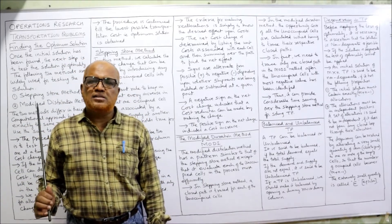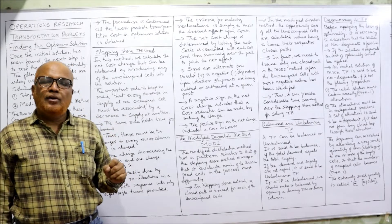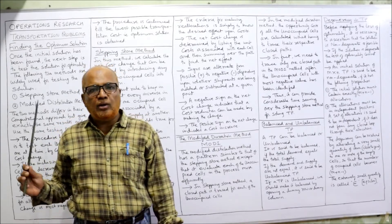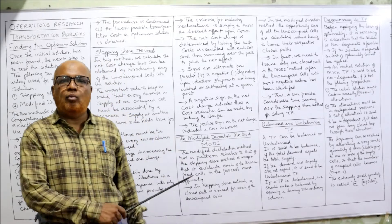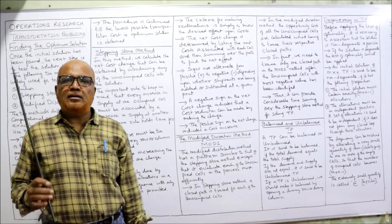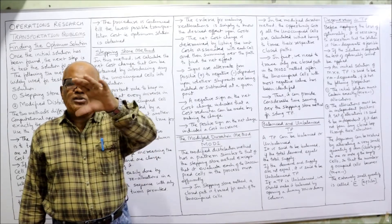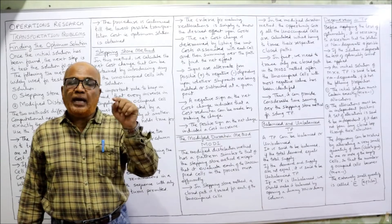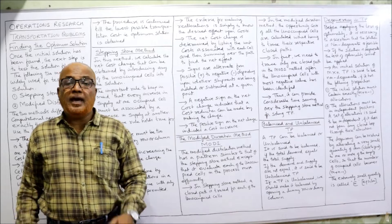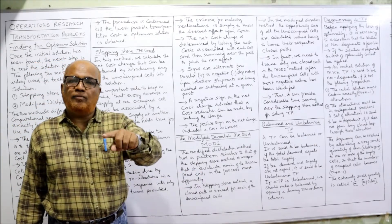The next method is more important — the MODI method, Modified Distribution method. Remember: for finding the optimum solution, if the question specifically asks you to apply stepping stone then only use stepping stone; otherwise always go for MODI method, because it is superior and less time consuming. Stepping stone is more time consuming because for every unoccupied cell we have to make a loop — if there are eight unoccupied cells, we make eight loops.